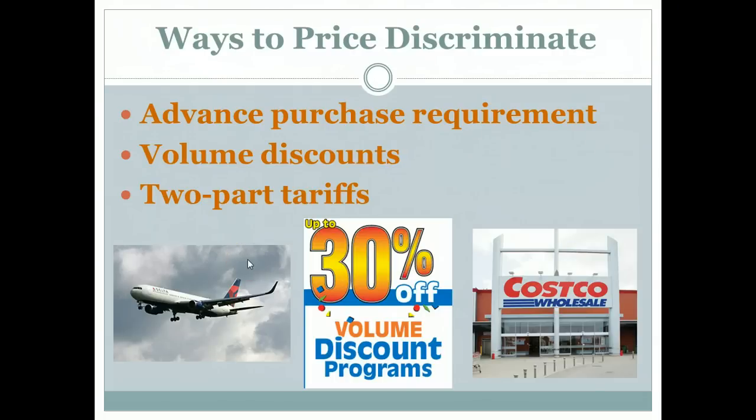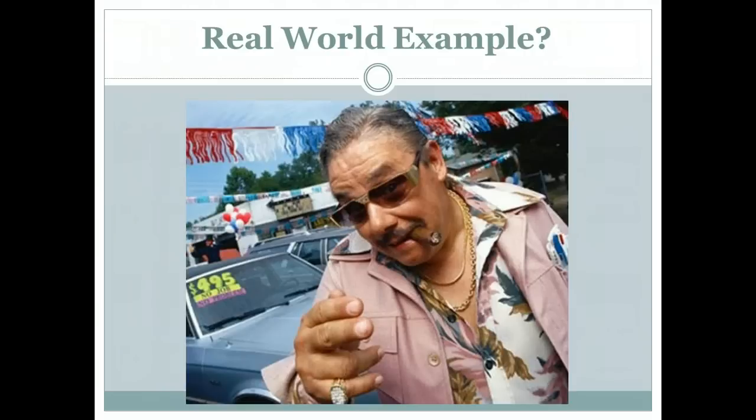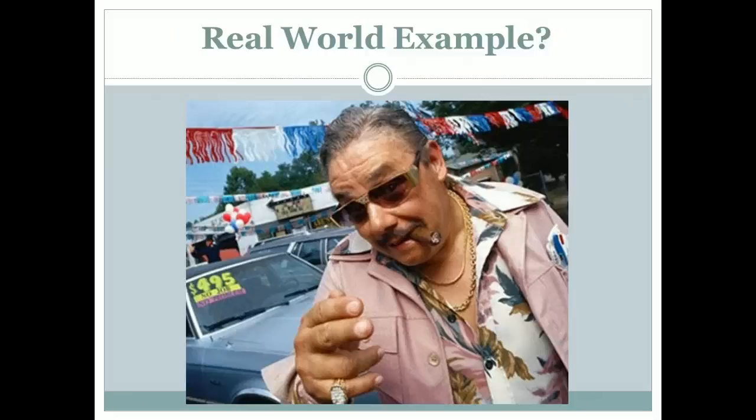Probably the ultimate real-world example of this is used car salesmen, where they will talk and negotiate with you until they get you down to that price you're willing to pay, and every person pays a slightly different price for every car they buy. That's exactly the kind of price discrimination you would expect out of a monopolist or virtually any other firm in any market structure except for perfect competition. We'll go ahead and take some more practice with this, look at some problems in class, and I'll see you when you get here.